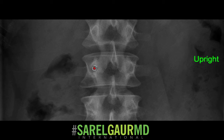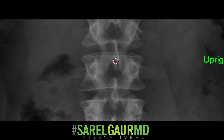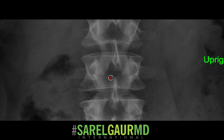From the pedicle, we can move back — here you can see the lamina on both sides coming together to form the spinous process. In between two spinous processes, we have the interspinous space, and in between two successive laminae, we have the interlaminar space. These are targets for lumbar punctures.